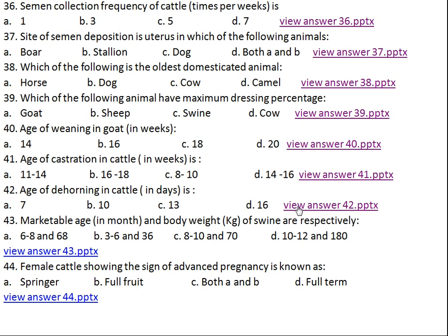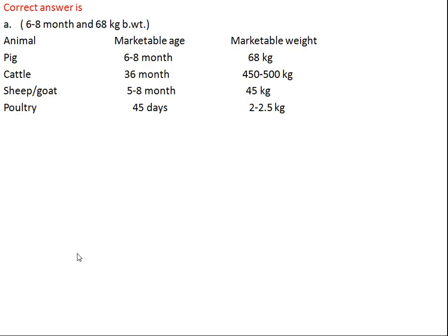Question number forty-three: marketable age in months and body weight in kg of swine are respectively what? Option A: 6–8 months and 68 kg, Option B: 3–6 months and 36 kg, Option C: 8–10 months and 70 kg, Option D: 10–12 months and 180 kg. The right answer is A, 6–8 months and 68 kg body weight. For cattle, marketable age is 36 months and body weight is 450–500 kg. For sheep and goat, marketable age is 5–8 months and weight is 45 kg. For poultry it is 45 days at 2 to 2.5 kg body weight.